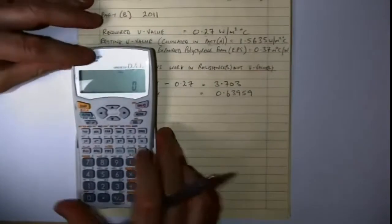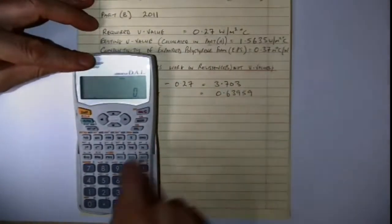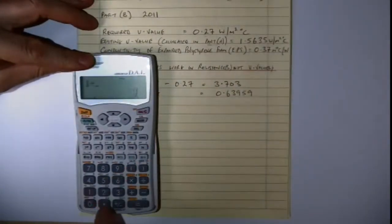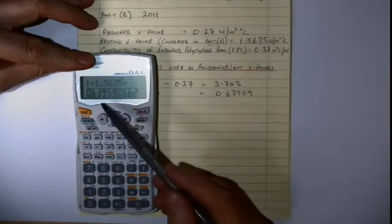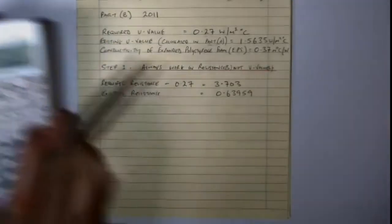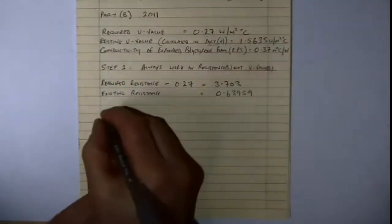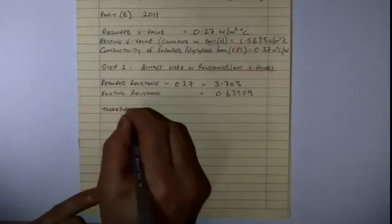And if I want to get the U-value, convert that to a U-value, and as you can see here I have the U-value up here, 1.5635. Divide 1 by that and that gets me my resistance. So I'm not going to bother writing it back in again because I already have it written on the sheet up here.